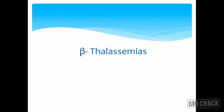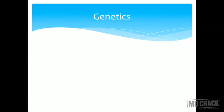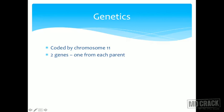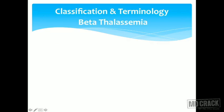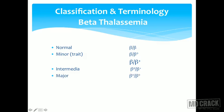In beta thalassemia, there is decreased production of beta chains, coded on chromosome 11, giving two genes per individual. Beta-zero indicates no synthesis of the beta chain; beta-plus indicates some amount of synthesis. In the minor or trait form, one gene has decreased or no production. In the intermediate form, both genes are defective. In the major form, both genes are either producing no beta chains or very little.